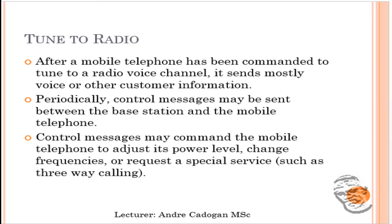After a mobile telephone has been commanded to tune to a radio voice channel, it sends mostly voice information. Even so, it will periodically send control messages between base stations and mobile telephones — for example, to handle three-way calling, adjust power levels if you are far from a base station and a handoff is necessary, as well as other special services like call waiting. Stop-and-burst messages must take place even in conversation mode.